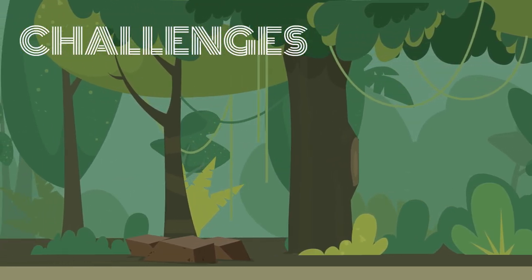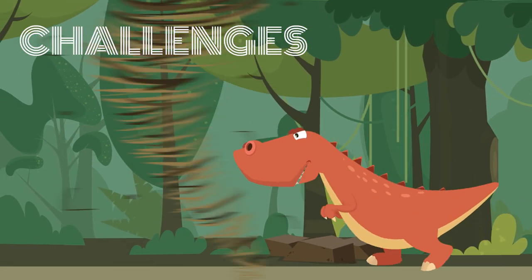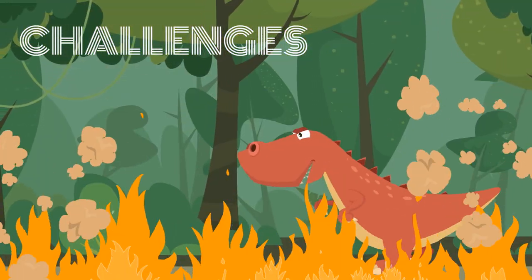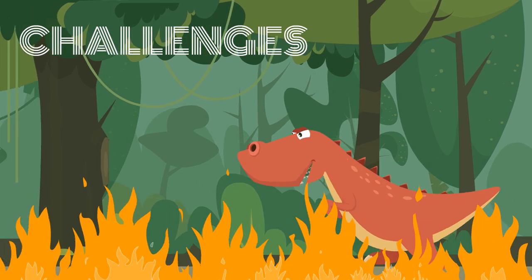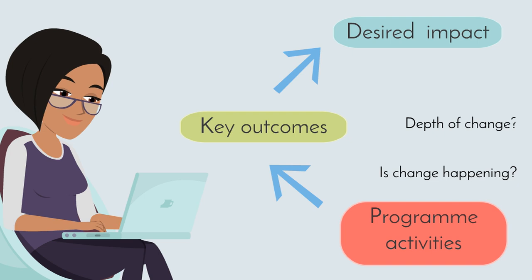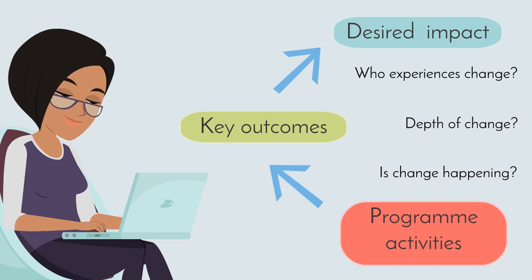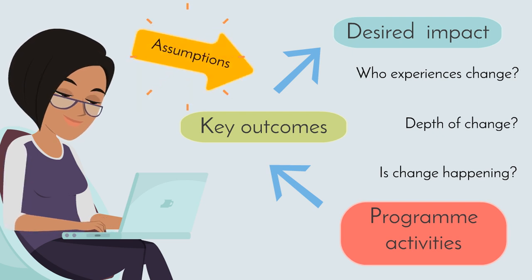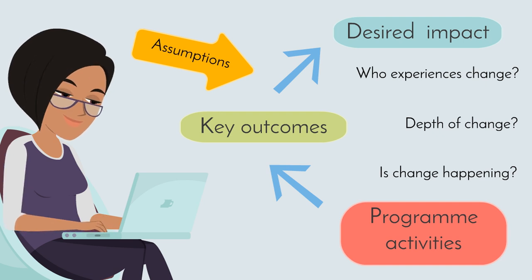As you run a program, you start to realize that reality is quite different to how you expect it. So when using the DCD standard, you must measure each step in your results chain to understand whether the change is happening, how deep the change is, and who is experiencing the change. This will tell you whether your starting assumptions were correct and whether your interventions are sufficient to get the changes you seek. If not, you still have time to adjust your activities to increase your chances of success.